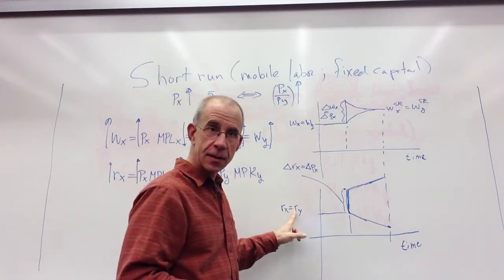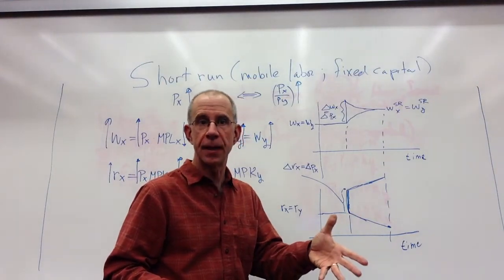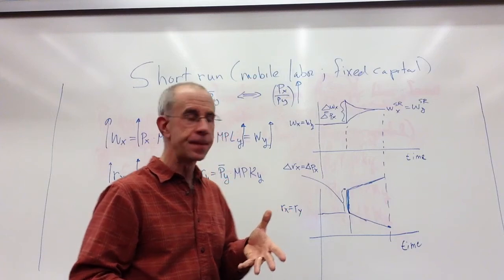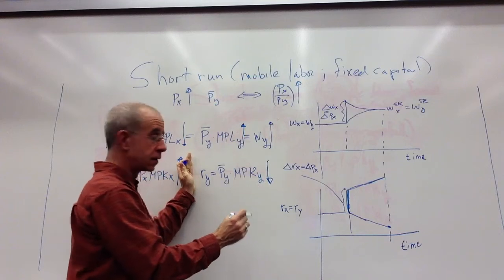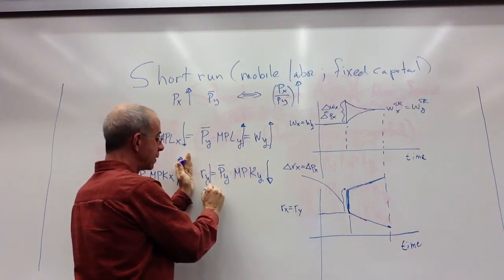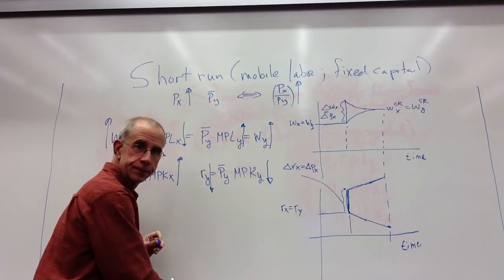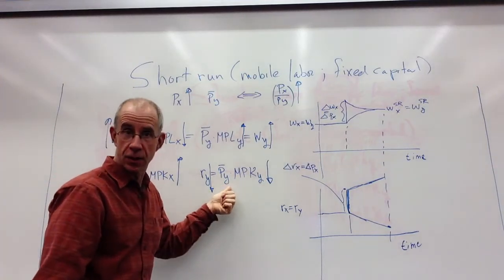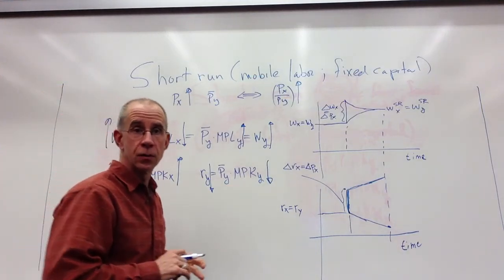Payments to capital in the Y sector are decreasing. The nominal payments are decreasing because the marginal productivity of capital is falling. That marginal productivity of capital falling pulls down the payments to capital. They can buy less of the good whose price hasn't changed, and they can certainly buy less of the good whose price went up.